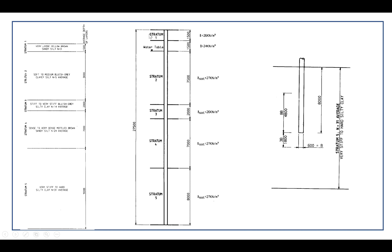Today we will talk about the basic formula — how to calculate a lateral spring and an end bearing spring. This is the soil profile. You can check the soil profile from Stratum 1 to Stratum 5. The thickness of Stratum 1 is 1.5 meters. The water table is at minus 3 meters from the ground surface. Stratum 2, Stratum 3 is 2 meters, Stratum 4 is 7 meters, Stratum 5 is 8 meters. The unit weight of soil gamma is equal to 26 kN per cubic meter.